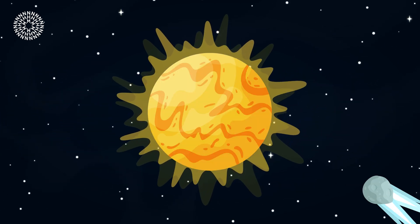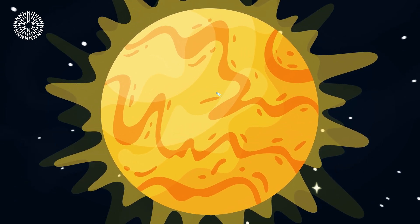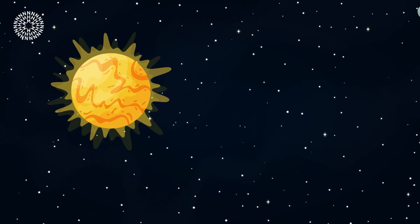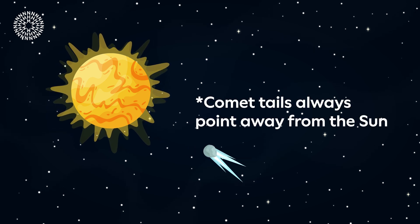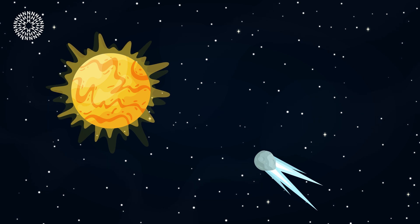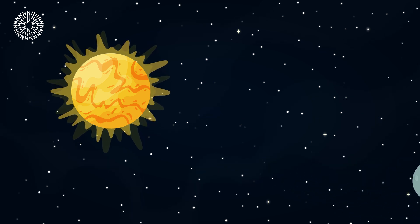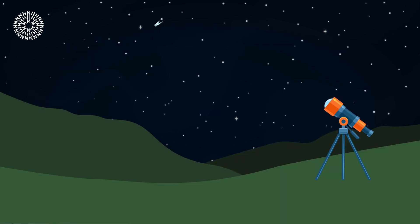Some comets dive right into the sun, never to be seen again. Others swing around behind the sun, with gravity acting like a slingshot, sending the comet hurtling back where it came from. This process repeats, and the comet will come back again and again.